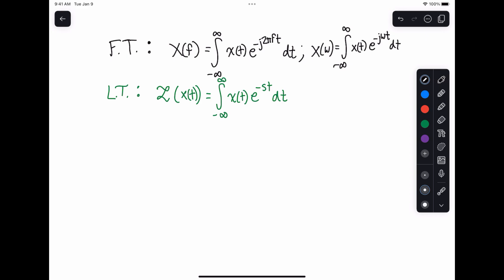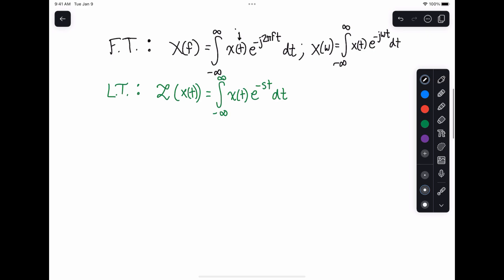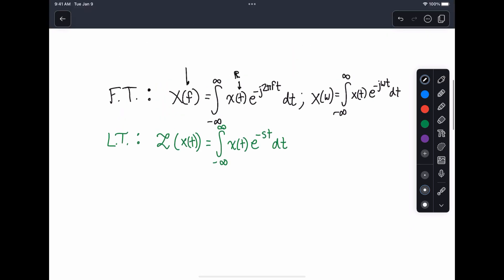And the thing to notice is in the Fourier transform, we're taking a function of a real variable, so t is a real variable, and we're returning a function of a real variable. Now, x of f may be complex evaluated at each frequency, but each f that you get is actually a real valued f. There's no imaginary frequency. You have positive and negative frequency, but it's still a real valued frequency, and of course, same with time. You don't have imaginary time, but you have positive and negative time.